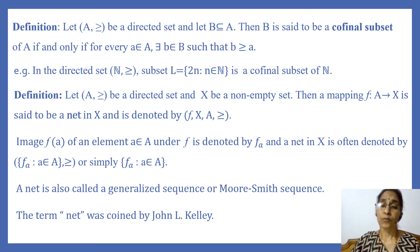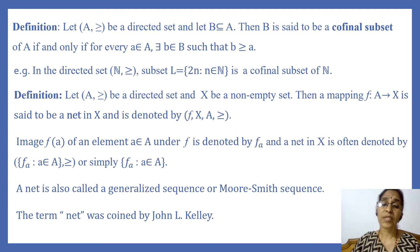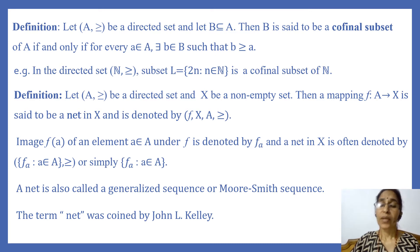For notational convenience, the image F(a) of element a ∈ A under F is denoted by F_a, and a net is often written as (F_a)_{a ∈ A} with the order that directs the directed set — simply written as (F_a, a ∈ A). This is also called a generalized sequence or Moore–Smith sequence. The term 'net' was coined by John L. Kelley.